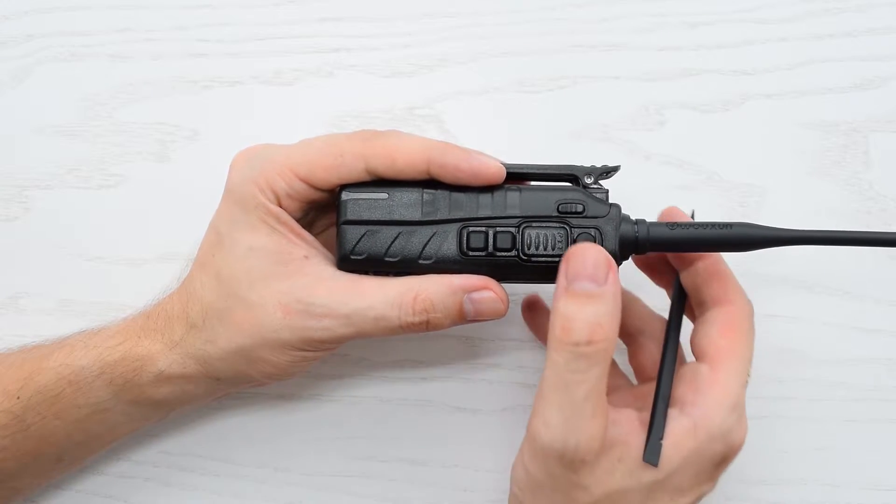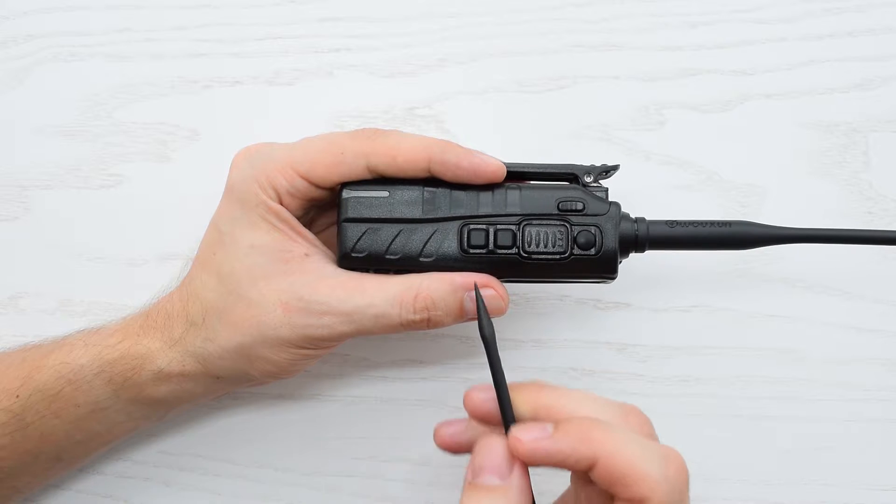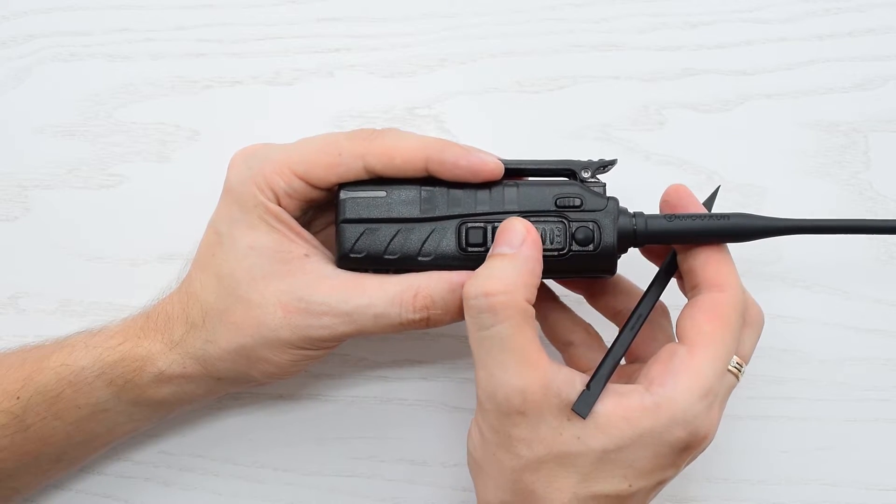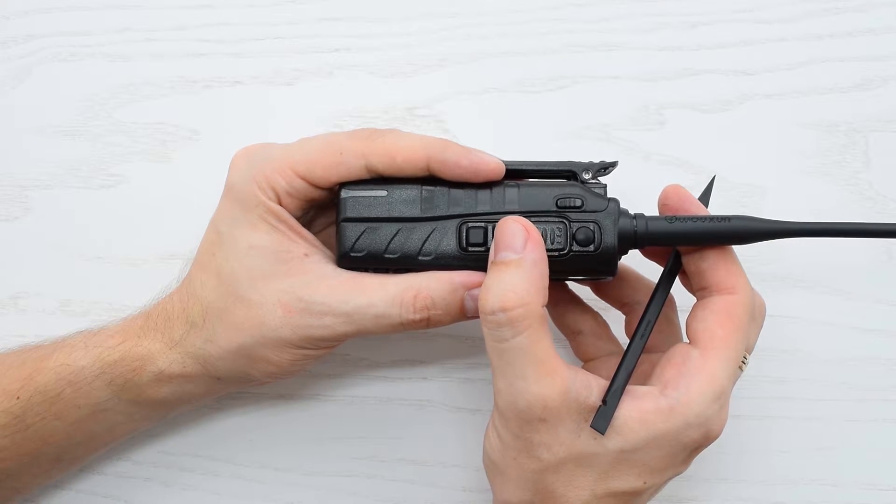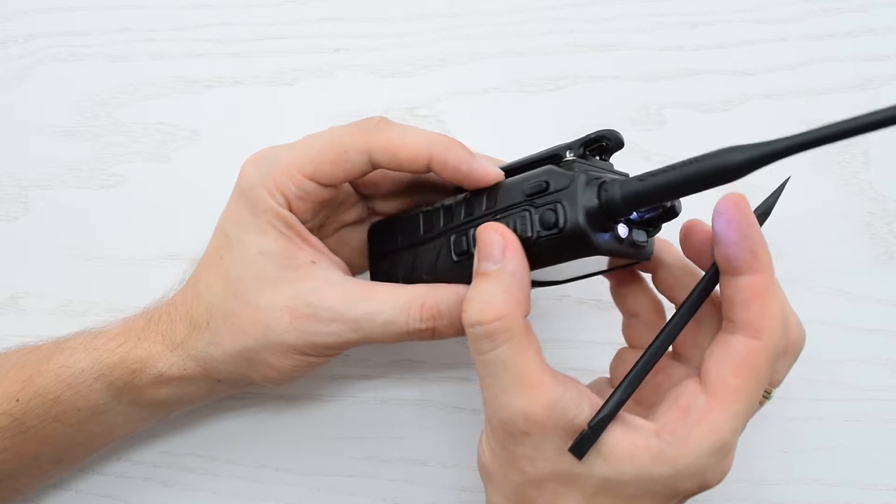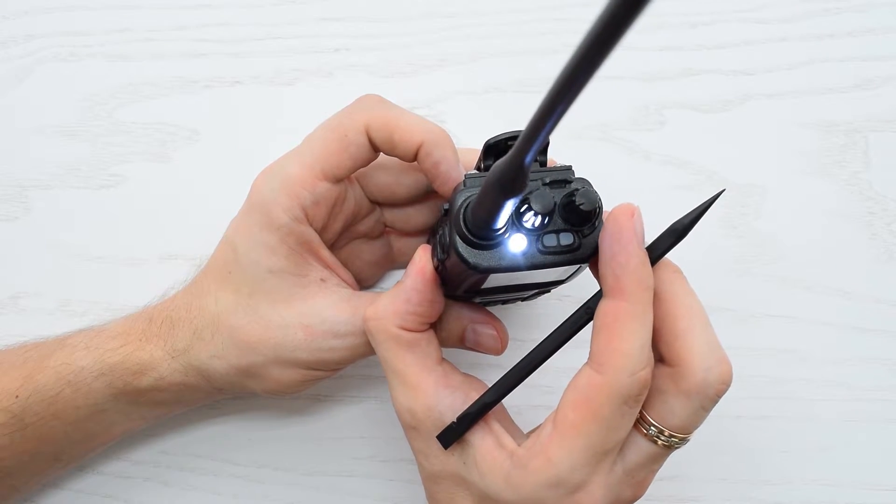Moving on to the left side, we got nice and solid push-to-talk button, and these are function buttons which provide different features. For example, a quick press of this button turns the FM radio on or off. A long press turns the flashlight on or off.